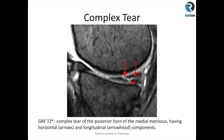Here is an example of a complex tear. There are two components to the tear: one is a horizontal component highlighted by the red arrows, and the arrowhead points towards a longitudinal tear which reaches the undersurface. This is a combination of horizontal and longitudinal tear, therefore it is described as a complex tear.